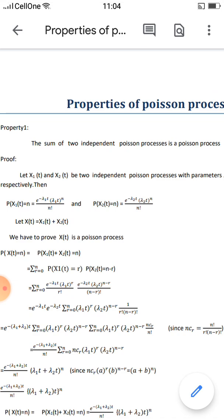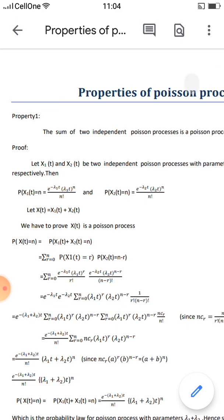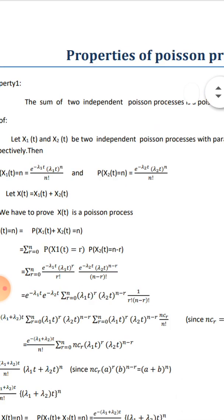Proof: Let X1(t) and X2(t) be two independent Poisson processes with parameters λ1 and λ2 respectively. The probability P(X1(t) = n) is equal to e raised to minus λ1t, times (λ1t)^n divided by n factorial.